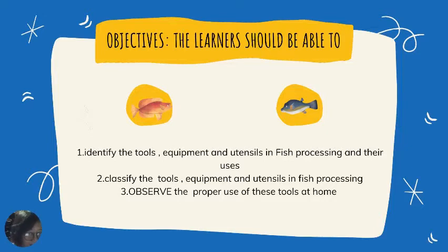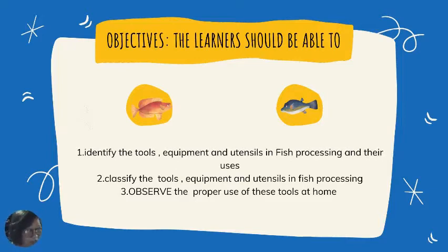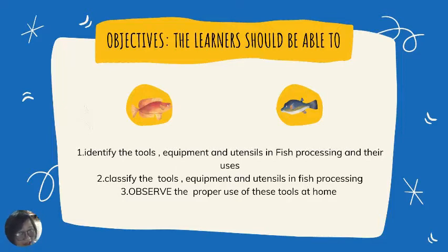What are the objectives? The learners should be able to: number one, identify the tools, equipment, and utensils in fish processing and their uses; number two, classify the tools, equipment, and utensils in fish processing; and number three, observe the proper use of these tools at home.